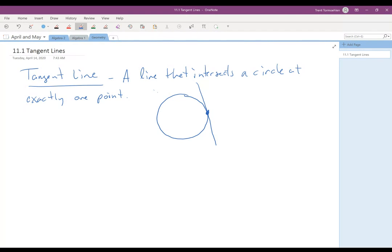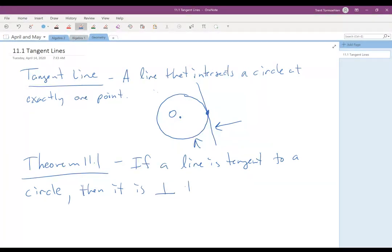So there are some important theorems about it. The first theorem from your book is theorem 11.1, and what it says is that if a line is tangent to a circle, so like the picture I just drew, this is a line that's tangent to this circle, we'll call this circle O.